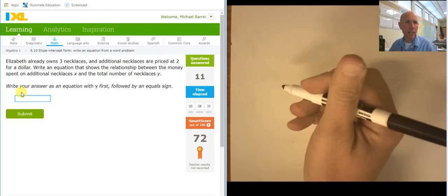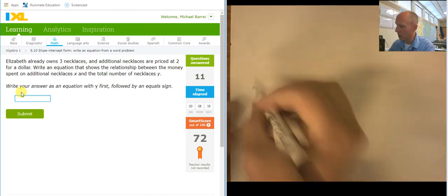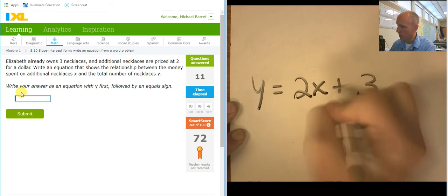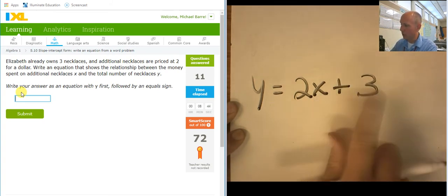She already owns three necklaces, and she's getting two for each dollar. So, y equals, she starts with three. So, zero dollars, she has three. One dollar, she has five. Two dollars, she has seven.